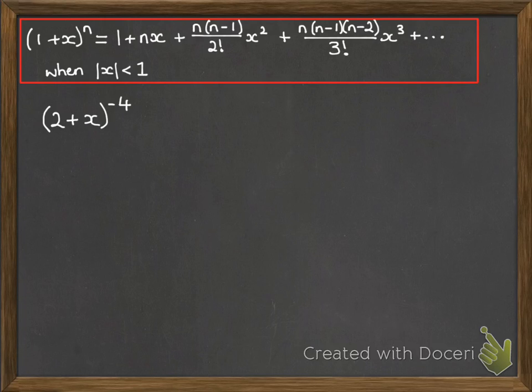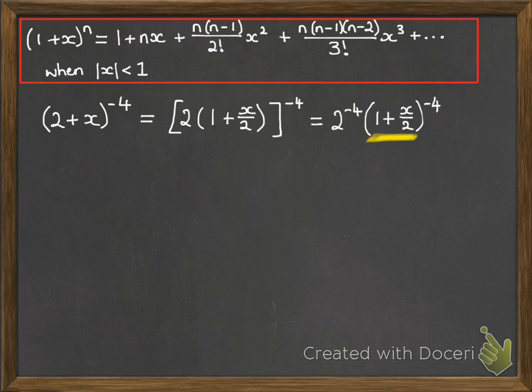What about if it doesn't start with a 1? If we've got something like 2 plus x to the minus 4, we just need to do a bit of algebra on it. We can rearrange that to be, if we take the 2 out of that bracket but not sort out the minus 4 bit yet, you can factorise that 2 plus x into a 2 brackets 1 plus x over 2, and then just get rid of those square brackets by doing everything to the power of minus 4. So now we can complete that expansion on the bracket 1 plus x over 2, because it's in the form that we want it to be, of 1 plus something to a power.